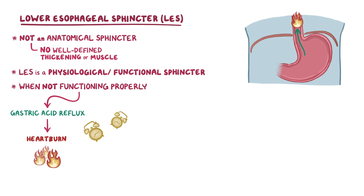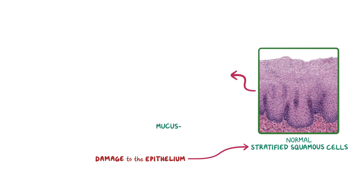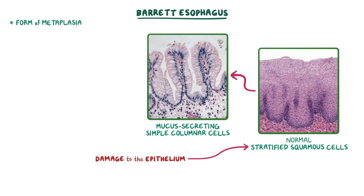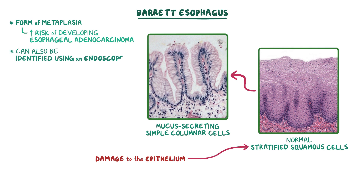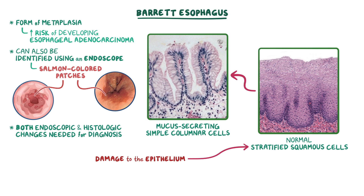Over time, prolonged exposure to gastric acid can cause damage to the epithelium of the esophagus. The body attempts to adapt by transforming the normal stratified squamous cells of the lower esophageal lining into a mucus-secreting epithelium with simple columnar cells, which are better at protecting themselves from the gastric acid. This condition is called Barrett esophagus, which is a form of metaplasia. Unfortunately, this metaplastic change also increases the risk of developing an esophageal adenocarcinoma. These changes can also be identified by using an endoscope, where we'd see salmon-colored patches at the lower segment of the esophagus. The presence of both endoscopic and histologic changes are needed for the diagnosis of Barrett esophagus.